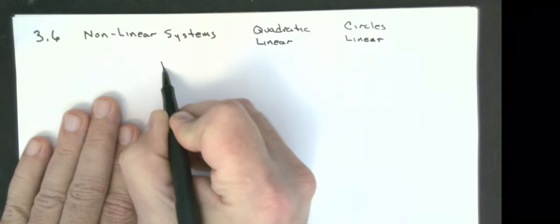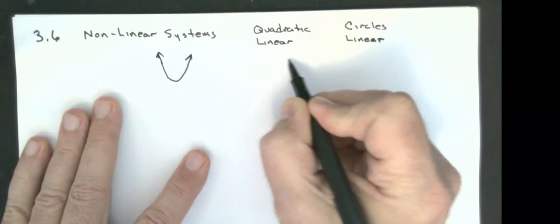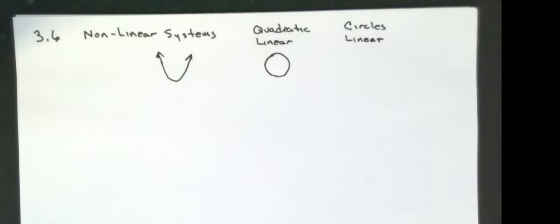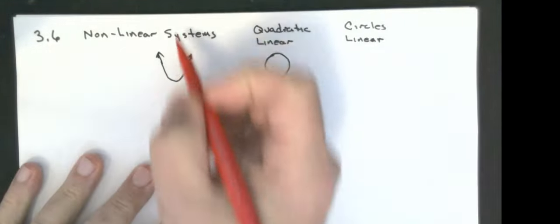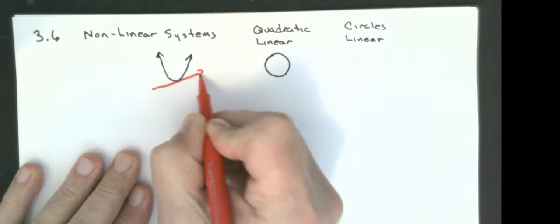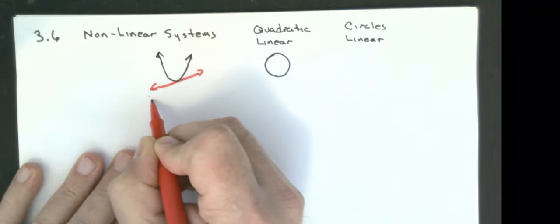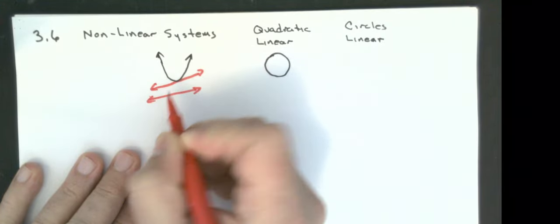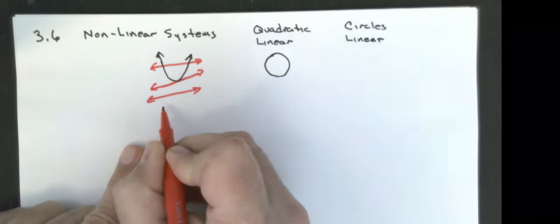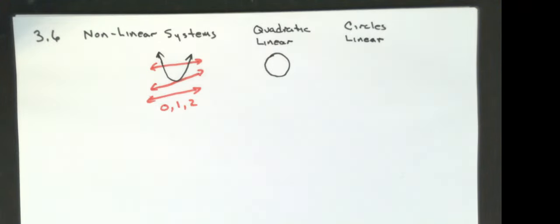What we're thinking about is we have either a parabola or a circle and some sort of line. Now for parabolas, it can touch the line once, it could touch it never, or it can touch it twice. So I can have 0, 1, or 2 solutions.